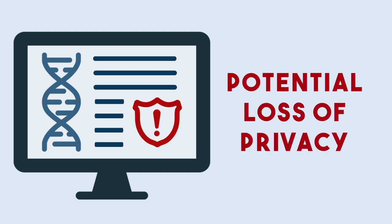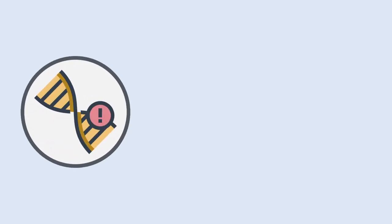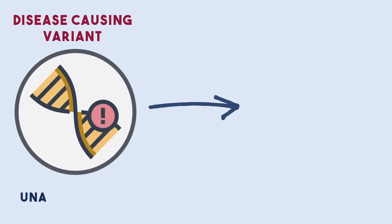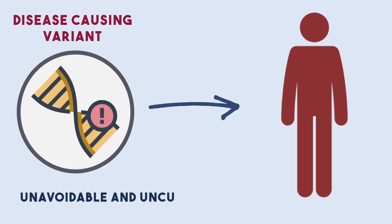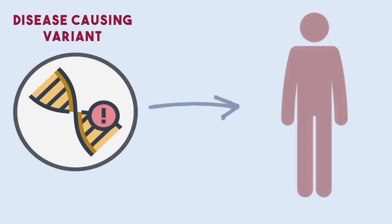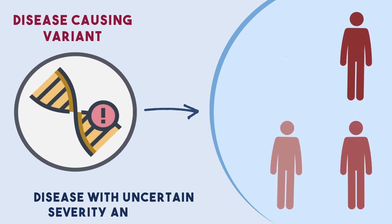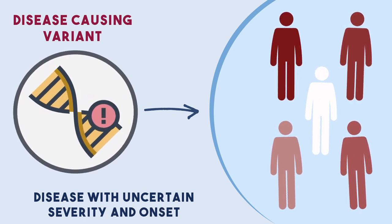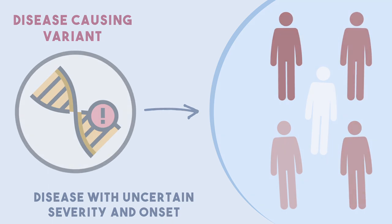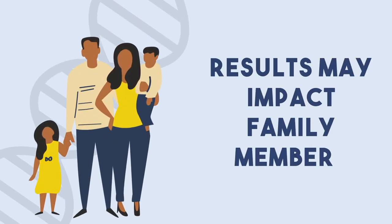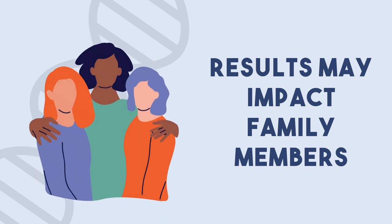However, there are also risks associated with whole genome sequencing. One is the potential loss of privacy, although scientists aim to take all the necessary steps to prevent that from happening. Another risk is finding out about a variant that guarantees you will develop a severe disease that cannot be avoided or cured, or finding out about a variant that may be related to a disease, but it is not clear whether or not you will go on to develop symptoms or how severe your symptoms might be. These results can also have an impact on your family members, since they may be at risk of carrying the same variant. All of these risks have significant emotional and social impacts.